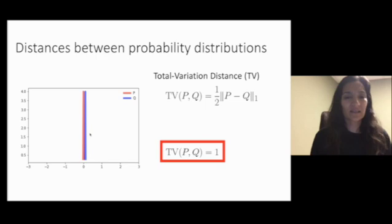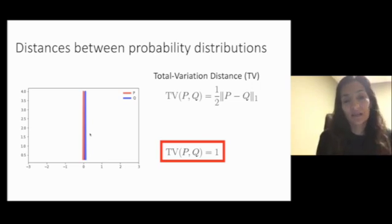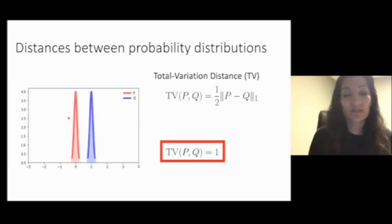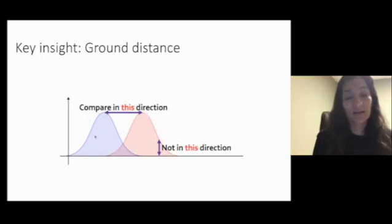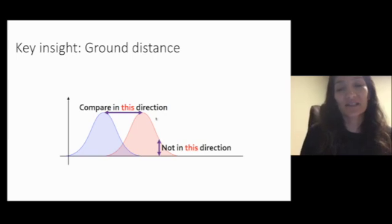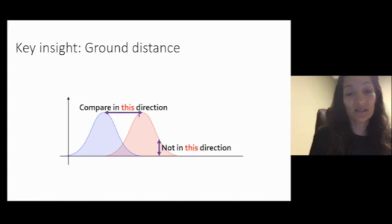But let's take a look at these two. Now these two distributions to us look a lot closer. They peak in similar places and they have lows in similar places. And yet the total variation distance here is also one. So there's something wrong here. Our intuition says that these are further apart than these. And the key insight here is that it's not always correct to compare probability distributions in a vertical direction. Actually, this horizontal direction of how displaced one distribution is from another along the x-axis gives rise to a notion called ground distance.